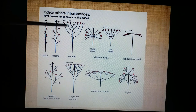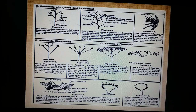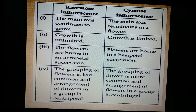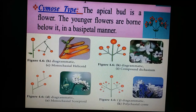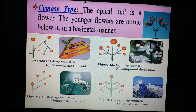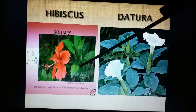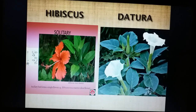Now we enter cymose inflorescence, quite contrasting to racemose: the growth of the main axis is limited and confined, further growth is taken up by branches, and flowers are arranged in a basipetal or centrifugal manner. The first type is solitary inflorescence — the peduncle terminates with a single flower. Axillary solitary is seen in hibiscus, and terminal solitary is seen in datura.